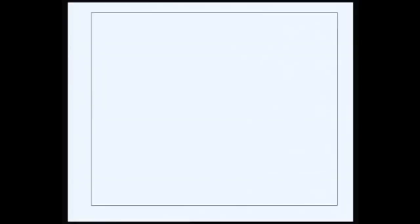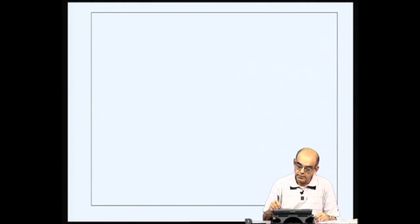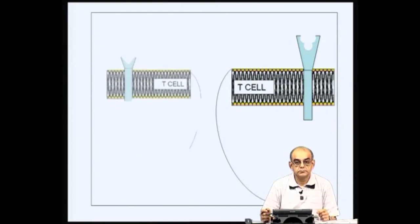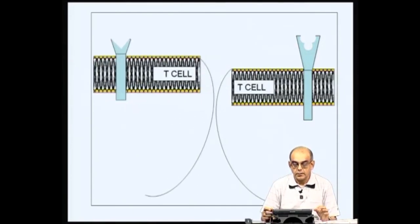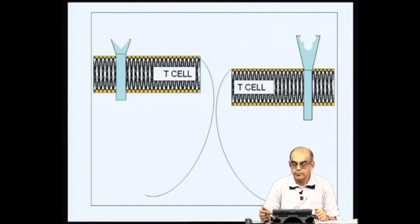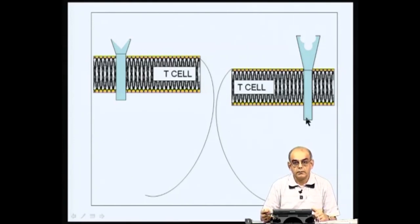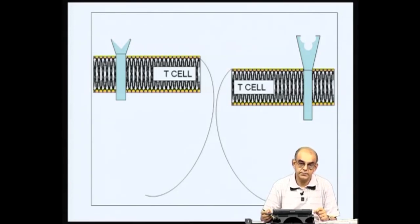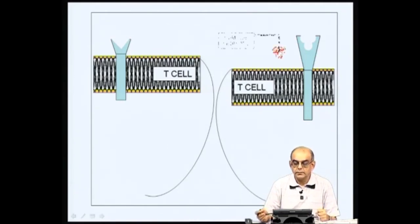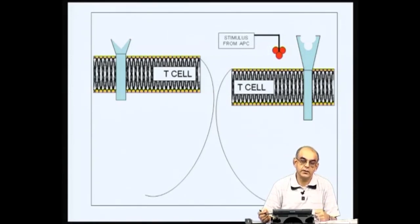Let us start and see what is the principle of this assay that involves T cell activation. If we have T cells in the mixture, let us see how they can be activated. The T cell gets activated via the presence of a receptor called the T cell receptor. The T cell can get activated in response to a stimulus that has to come from another cell type, basically an antigen presenting cell or macrophage.